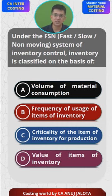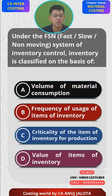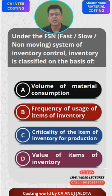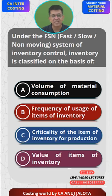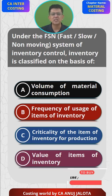The other options don't make sense. Volume of material consumed (A) refers to how much you're consuming, not the speed. Criticality (C) refers to how critical an item is, which is not what this question addresses. Value of items in inventory (D) is part of the ABC system — category A being the most important and category C being less important goods.